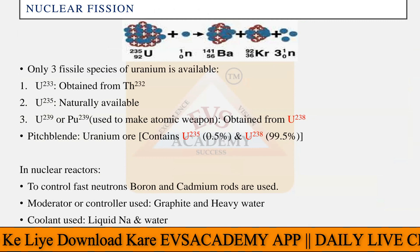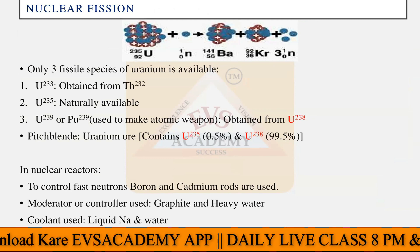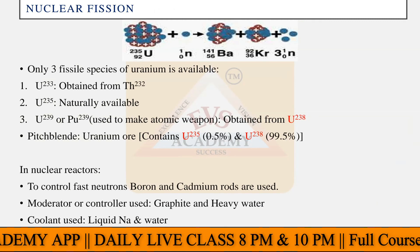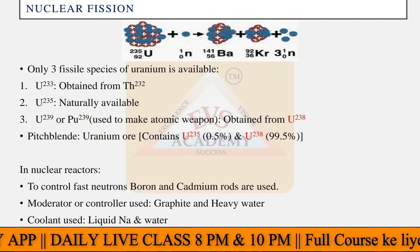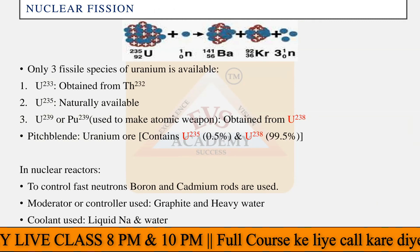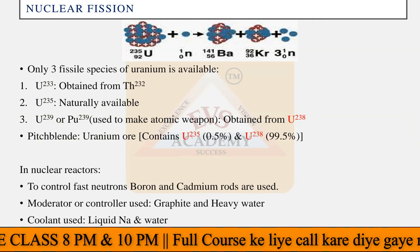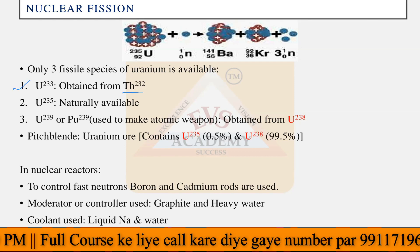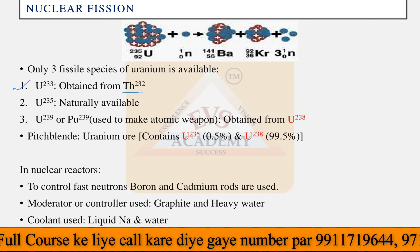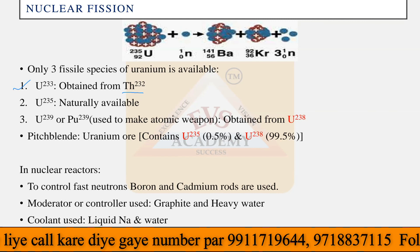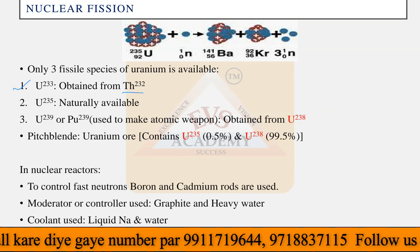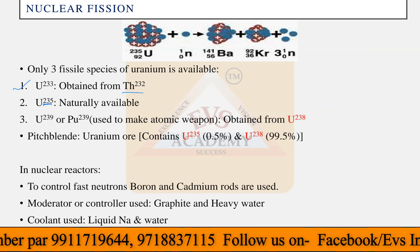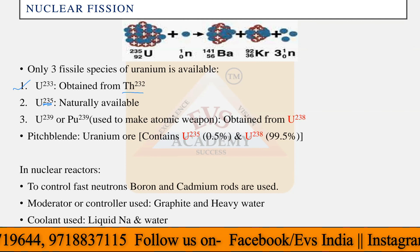There are three fissile species of uranium available in the world that we can use for nuclear fission reactions. Uranium-233 is obtained from thorium-232 — through a thorium reaction we create uranium-233. Uranium-235 is the only naturally available form.